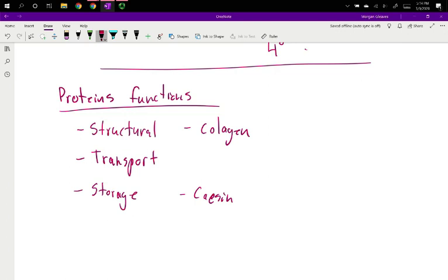But you need a store of it around. We don't store iron in our bones like we do calciums and phosphates. So we need a different way to store it. Structural, transport, storage.